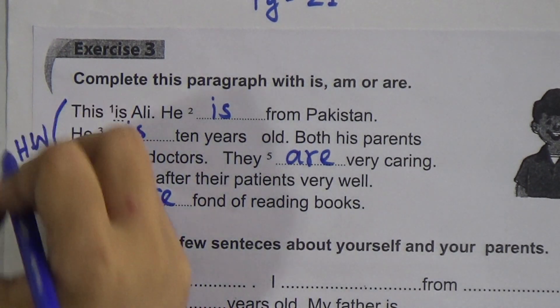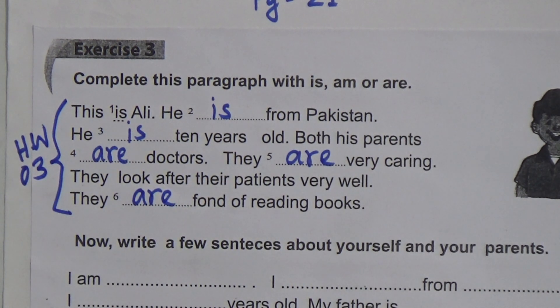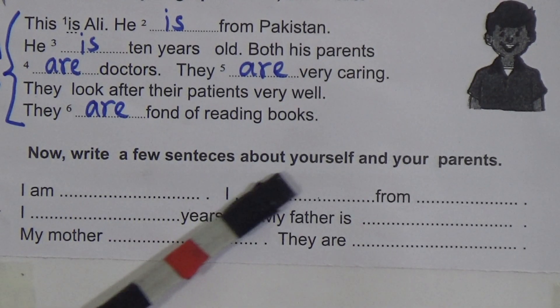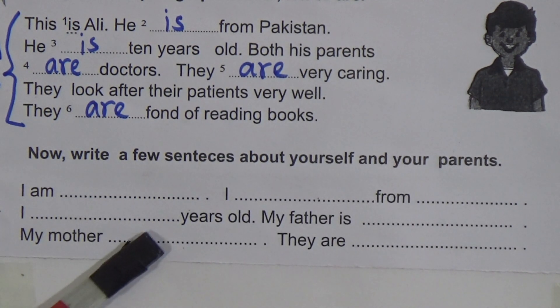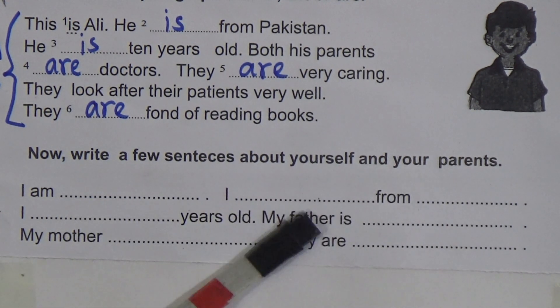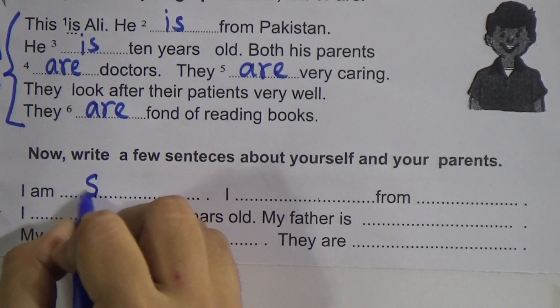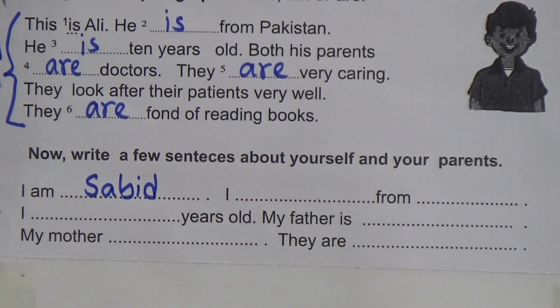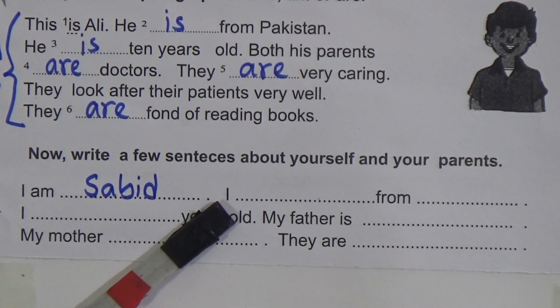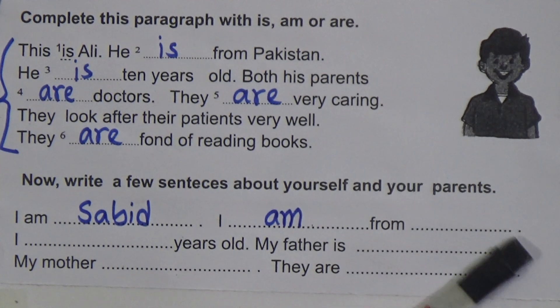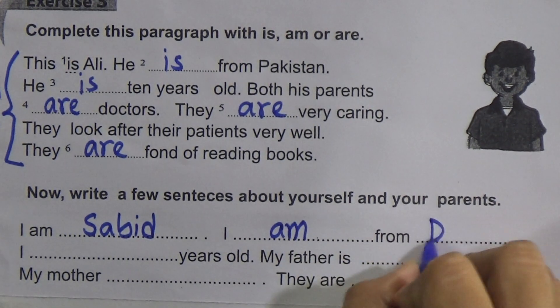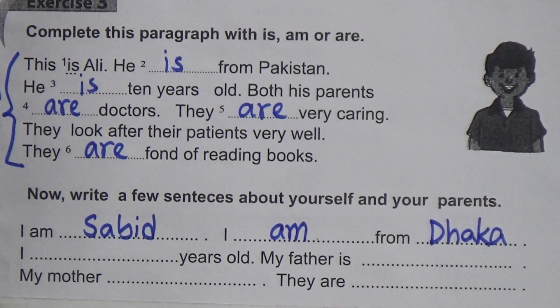Now we will go to the second part: write a few sentences about yourself and your parents. You will fill in these sentences with your own information. Let's take a boy named Sabi as an example. You write: I am Sabi. Since 'I' is given, we always use 'am' after 'I'. So: I am from ___ — write the name of a place — for example: I am from Dhaka, which is the capital of Bangladesh.